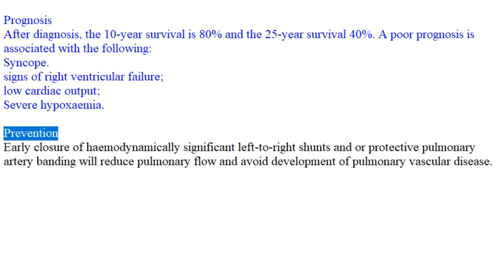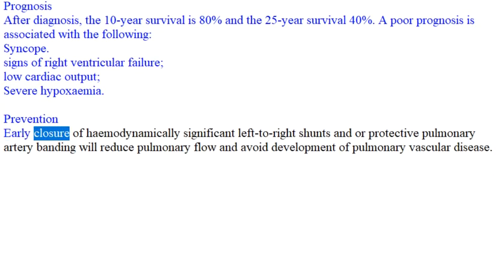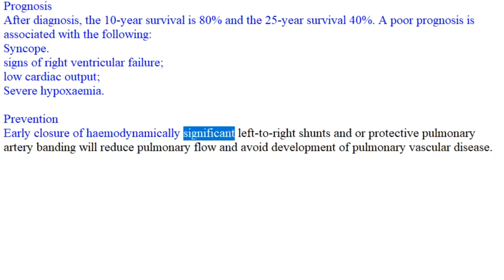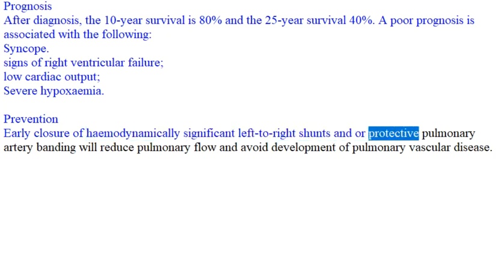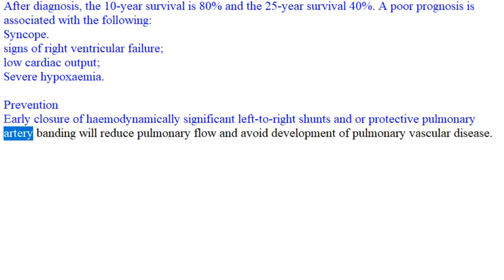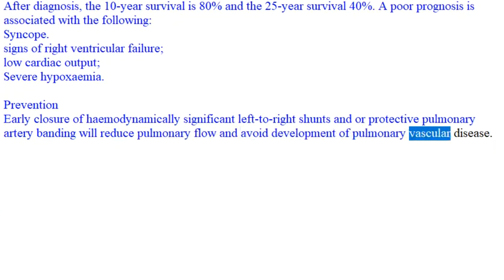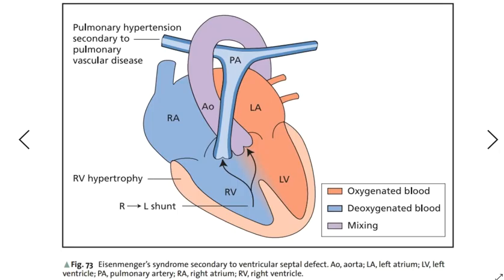Prevention: Early closure of hemodynamically significant left-to-right shunts and/or protective pulmonary artery banding will reduce pulmonary flow and avoid development of pulmonary vascular disease.